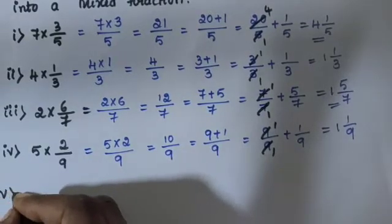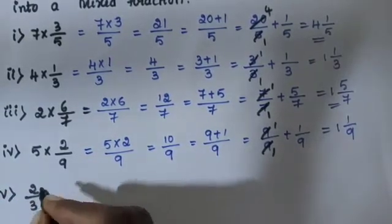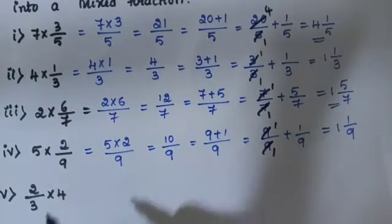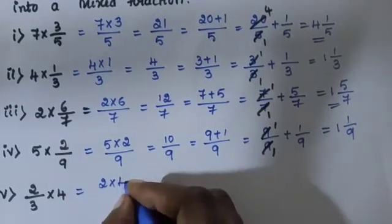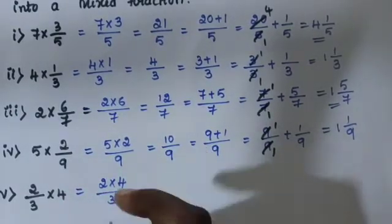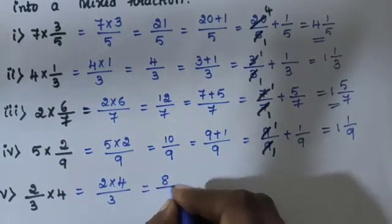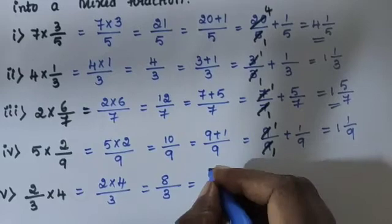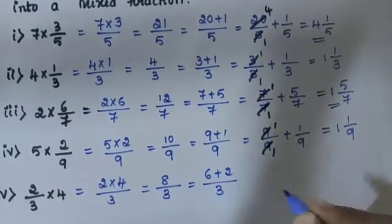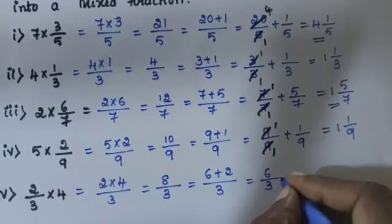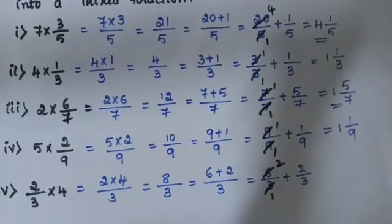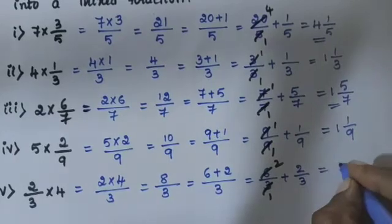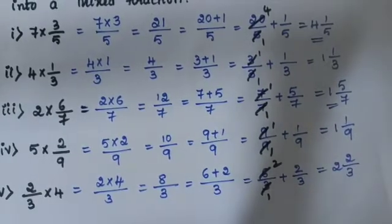Sub-question 5: 2 by 3 into 4. The fraction is 2 by 3 and the whole number is 4. Multiply the whole number with the numerator: 4 into 2 is 8, divided by 3. Answer is 2 and 2 by 3.